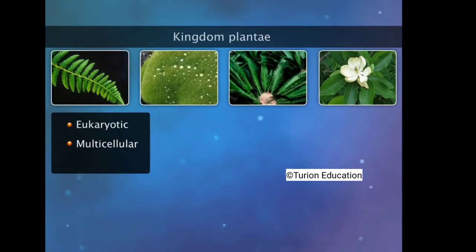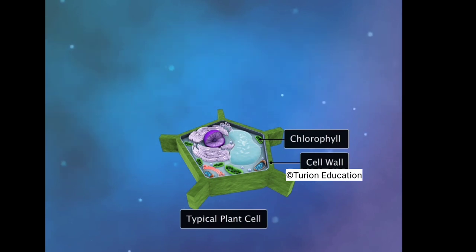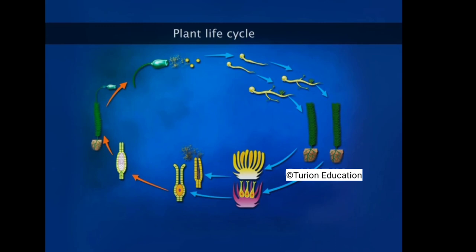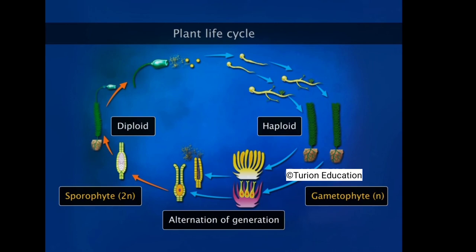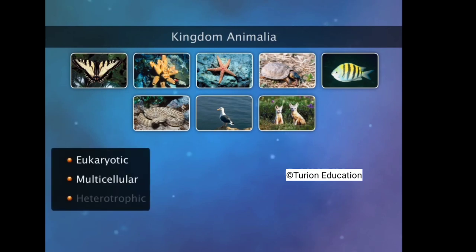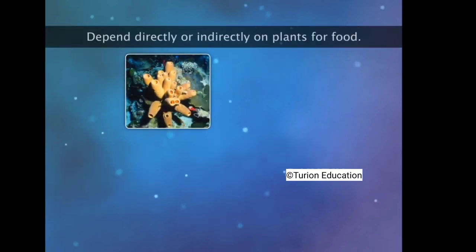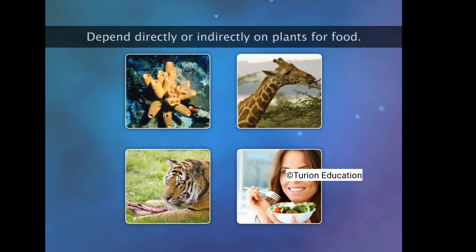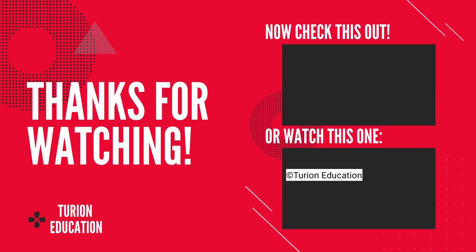Kingdom Plantae includes all eukaryotic, multicellular, autotrophic organisms commonly called plants. The life cycle of plants has two distinct phases — the diploid sporophytic and the haploid gametophytic — which alternate with each other. Kingdom Animalia is characterized by eukaryotic, multicellular, heterotrophic organisms that completely lack cell walls; they depend directly or indirectly on plants for food, and their mode of digestion is holozoic. The five-kingdom classification of Whittaker does not include some acellular organisms such as viruses, viroids, and lichens.